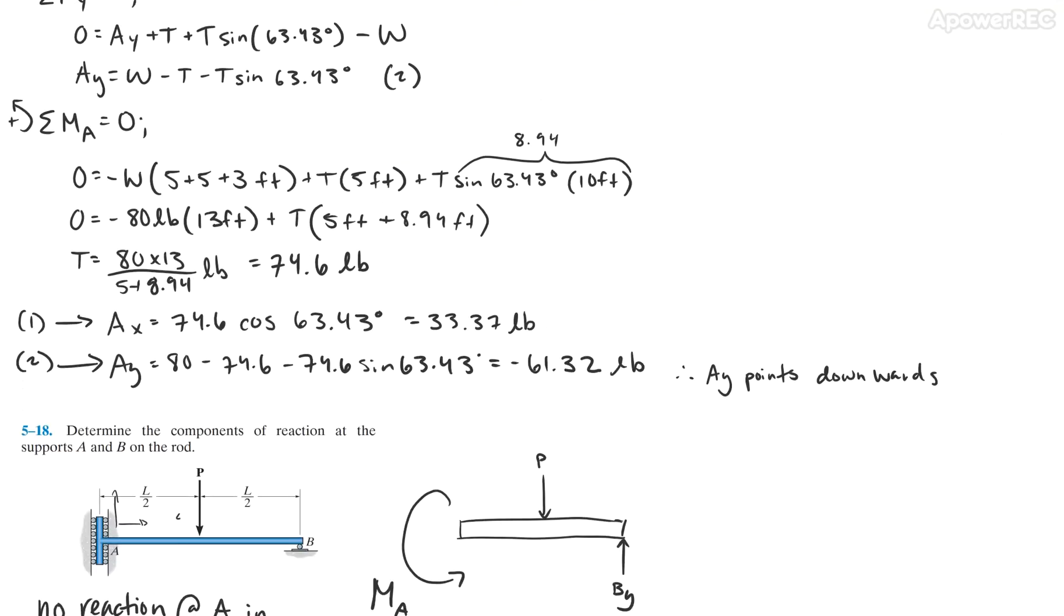Then the second to last step is that we're going to take the sum of the moments at A. We do this because it cancels out the other components at A and we're just left to solve for tension. We can see that zero equals the negative of the weight times the distance between point A and W, which is 13 feet, plus tension at 5 feet, and then tension times sine theta at 10 feet.